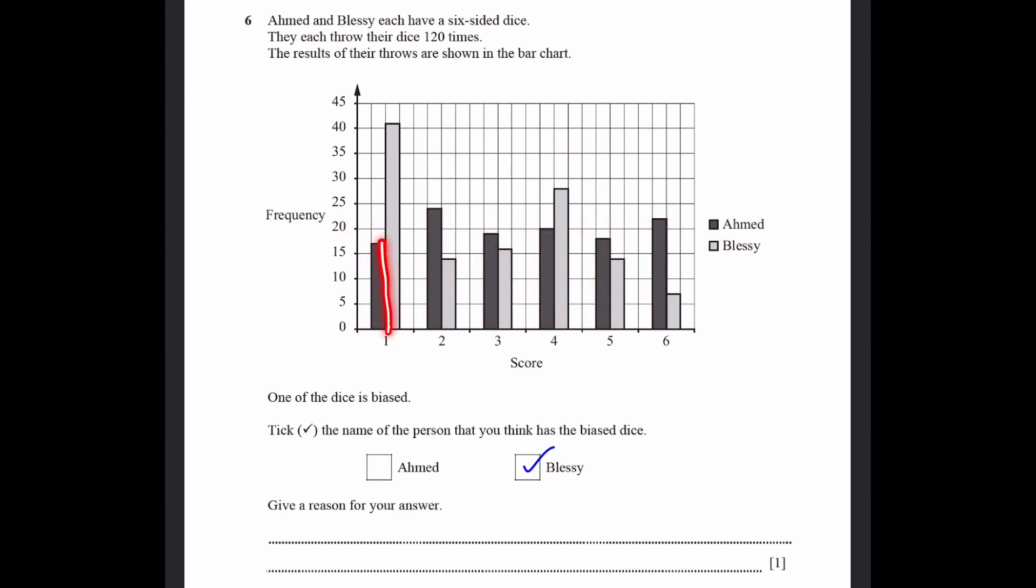But then for Blesi's dice, there's too many 1s. And then these values are a bit normal. And then there's less 6s. There's not even 10 sixes in there. So you can write the reason as, Blesi's dice has rolled an unnaturally high frequency of 1s. Meaning, the number of 1s which Blesi's dice has rolled is too much compared to normal.